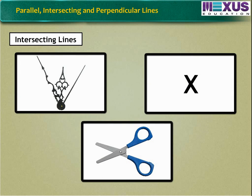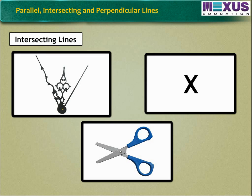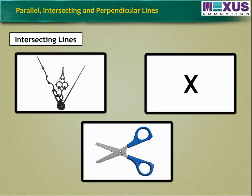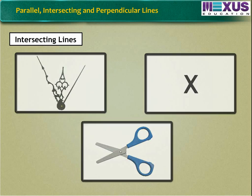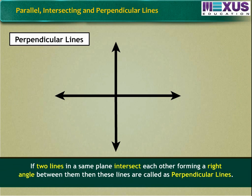Examples of intersecting lines are hands of a clock, the letter X, scissors, etc. Now, if two lines in a same plane intersect each other forming a right angle between them, then these lines are called as perpendicular lines.